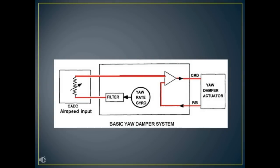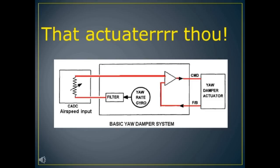Anyway guys, as you can see here are the basic construction of Yaw Damper system which most of nowadays large aircraft utilize. It consists of Yaw Rate gyro, a filter, a CADC and Yaw Damper actuator.